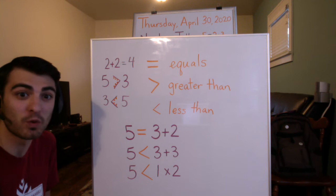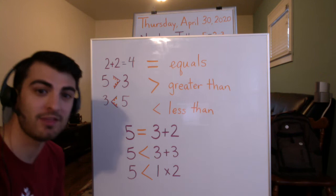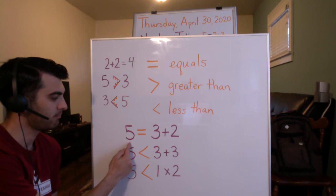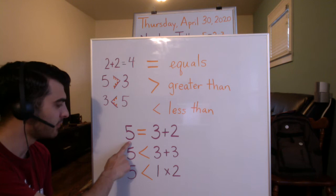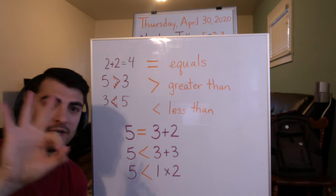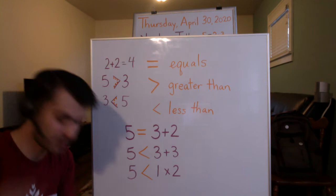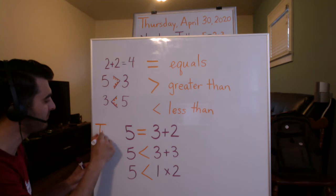So now in the Thursday math sheet, you're going to see some equations, and you're going to have to say if the statement is true or false. For example: 5 equals 3 plus 2. If I have 3 and I add 2: 1, 2, 3, 4, 5 — 3 plus 2 is 5. So this statement is true. 5 does equal 3 plus 2, so you'd write true next to that equation.